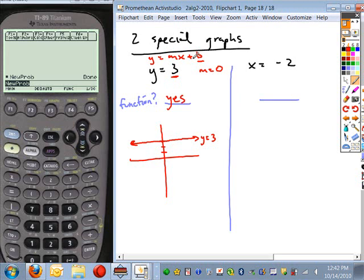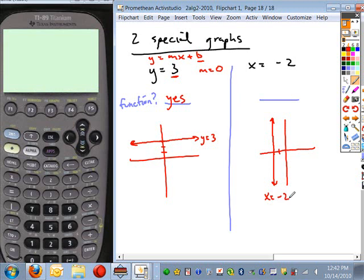Now what about this one? x equals negative 2. Instead of being a horizontal line, this one's going to be vertical. So here's the graph for this. But does this pass the vertical line test for a function? No. So this is not a function.